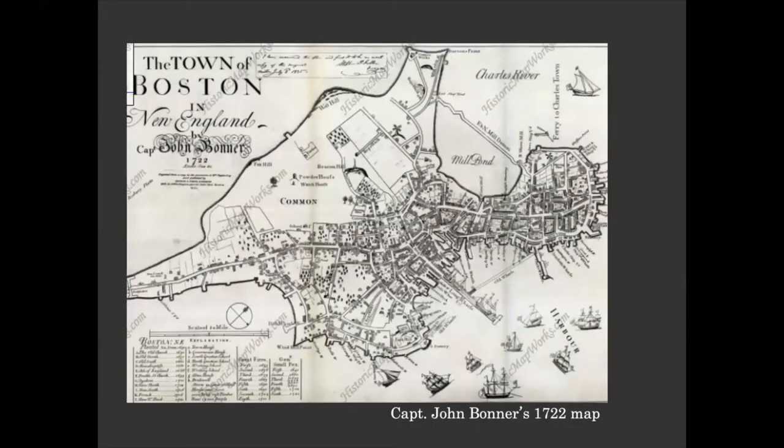Our Scots-Irish people were part of a huge exodus in 1718 and 1719. They were Ulster Scots, meaning they were living in Northern Ireland but had a lot of Scottish origins. Maps from the 1720s tell us a lot about Boston of the era.